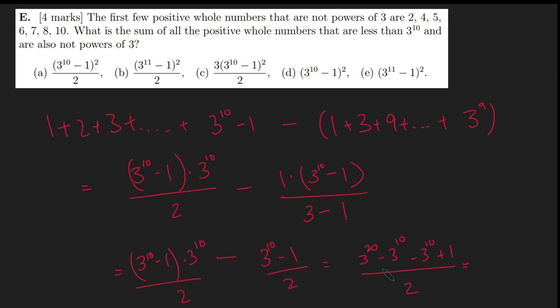And this is 3 to the 20 minus 2 times 3 to the 10 plus 1, which kind of looks a bit like x squared minus 2x plus 1. And in fact, it is x minus 1 squared if we just set x equals 3 to the 10. And so this is going to be 3 to the 10 minus 1 squared all over 2.